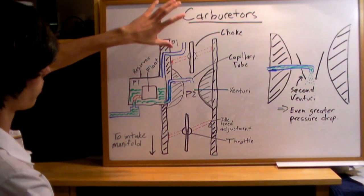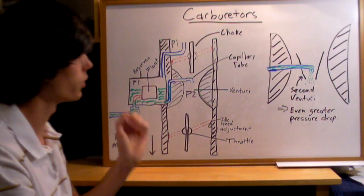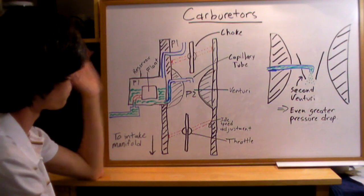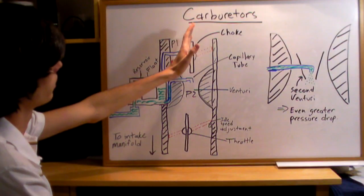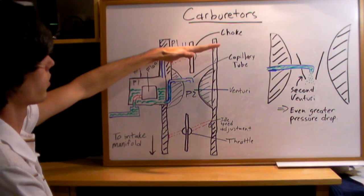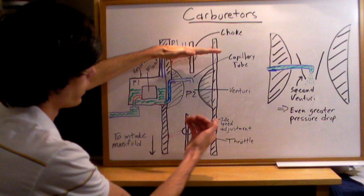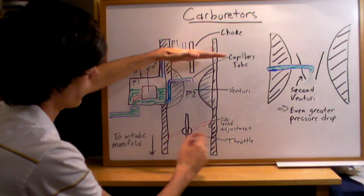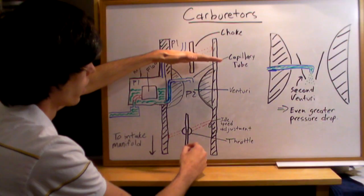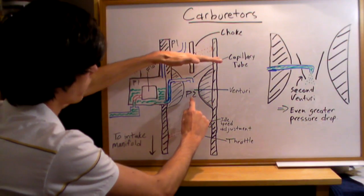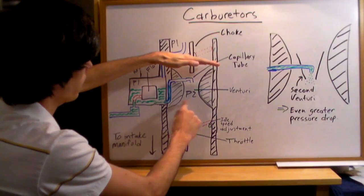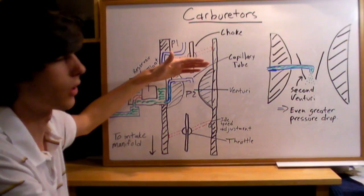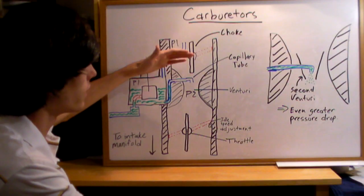There are several other components that are useful to understand. You've got a choke which is used for cold starts. What happens is you close the choke completely, and then when your cylinder goes down for the intake stroke, it's going to create a vacuum in here. That vacuum creates a large pressure decrease between here and here, so it's going to pull out a lot of fuel. It's going to be a very rich mixture, more than an ideal stoichiometric balance of fuel to air.